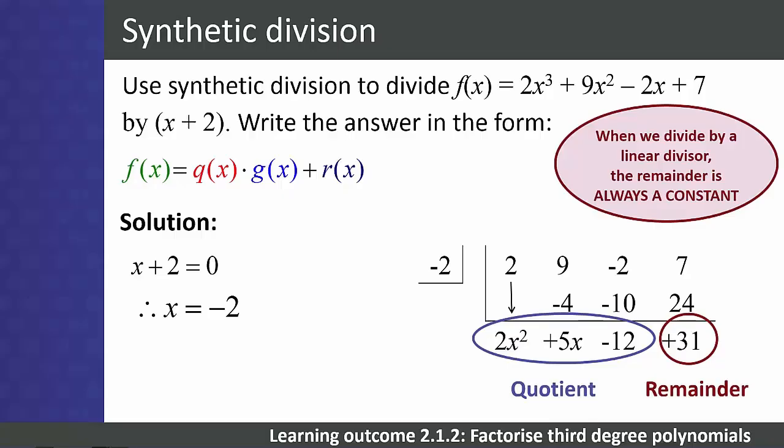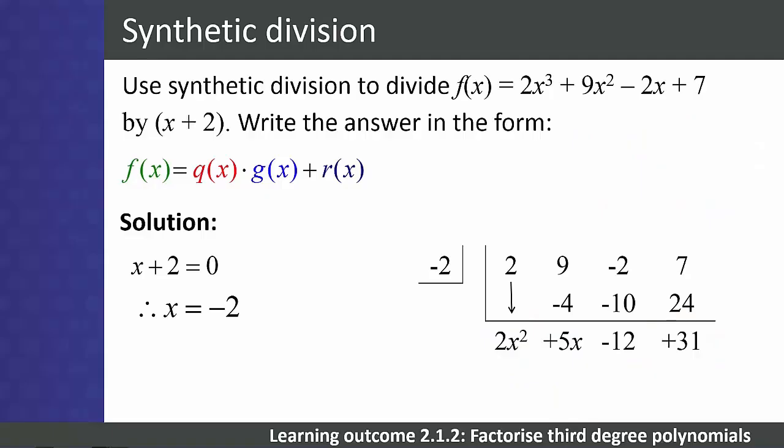Remember, when you divide by a linear divisor, the remainder is always a constant. Now, let's write the solution in the correct form. 2x³ + 9x² - 2x + 7 = (2x² + 5x - 12)(x + 2) + 31.